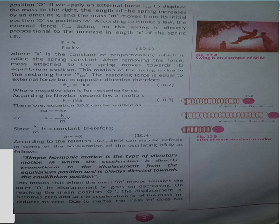Spring سے بندی ہوئی mass m کی simple harmonic motion کی time period T کا فارمولہ مندرجہ ذیل ہے: T = 2π √(m/k)۔